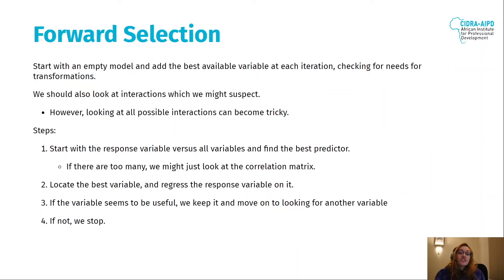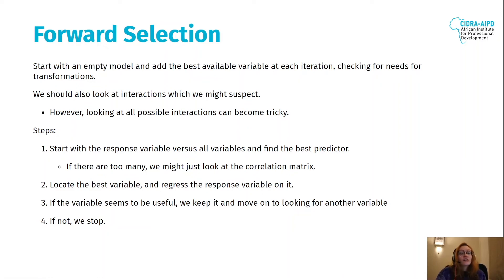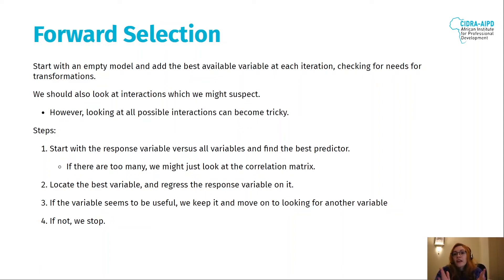In forward selection, we start with an empty model and add the best available variable at each iteration. We always check if we need to transform something or add another variable. We should also look at interactions that we suspect could exist in our data. However, looking at all possible interactions can be very tricky — if you have ten variables, you'll have interactions between all of them, which is a lot of new variables to evaluate.